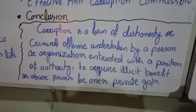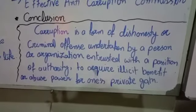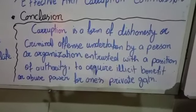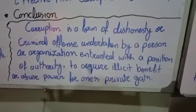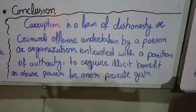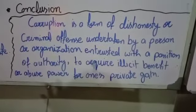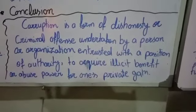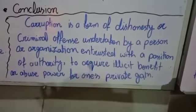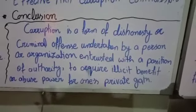Corruption basically kya hai: Corruption is a form of dishonesty or criminal offense undertaken by a person or organization. یہ ایک ایسا جرم یا dishonesty کا کام ہے جو کوئی بھی شخص یا organization کر سکتی ہے — interested with position or authority۔ جس کو authority یا position دی جاتی ہے وہ اسے to acquire illicit benefits or abuse power for one's private gain استعمال کرتا ہے۔ یعنی اپنے ذاتی فائدے کے لیے یا اپنی طاقت کا ناجائز استعمال کرتے ہوئے ذاتی مفاد حاصل کرنا — یہ سب corruption کی category میں آتا ہے۔